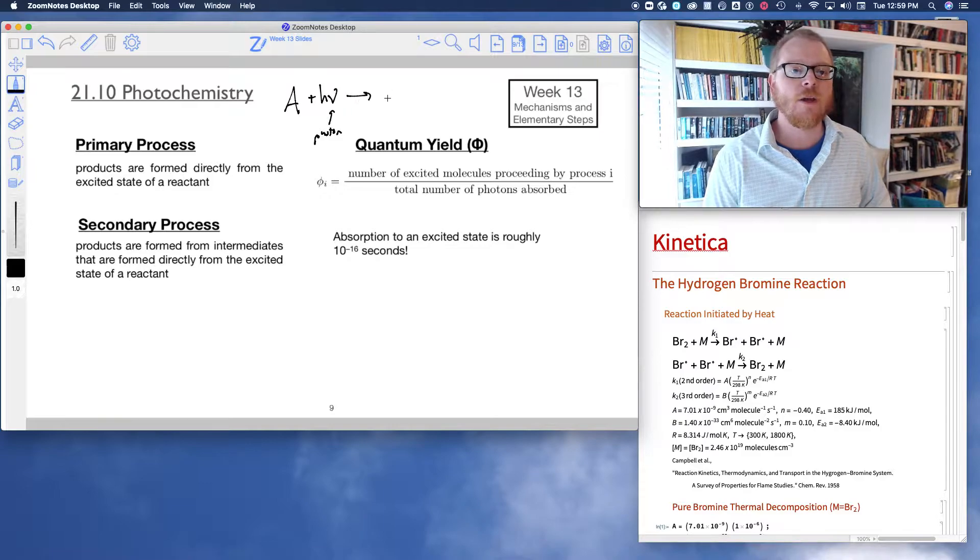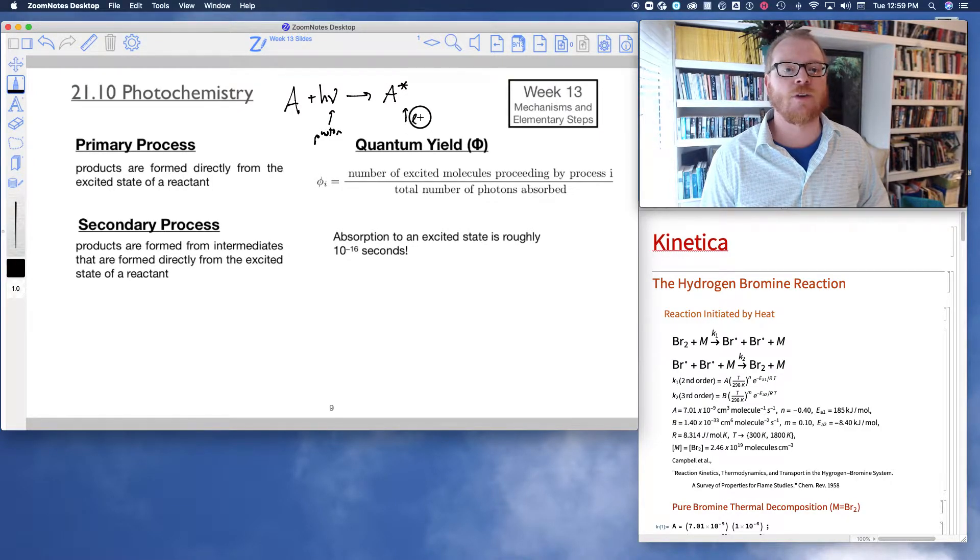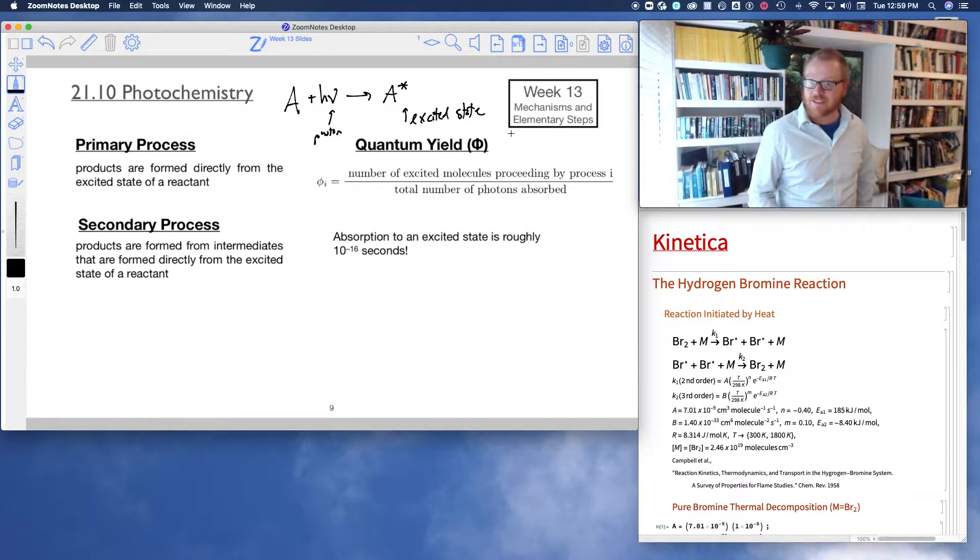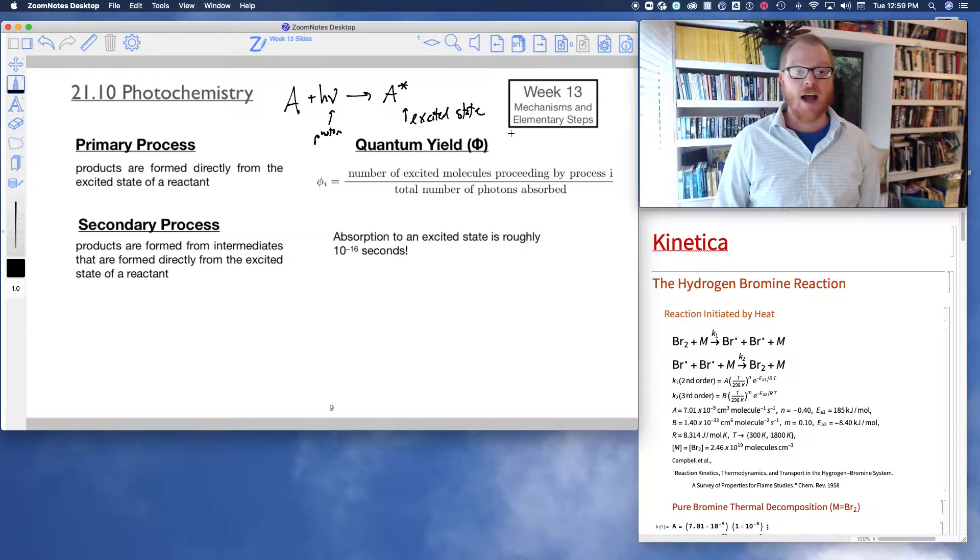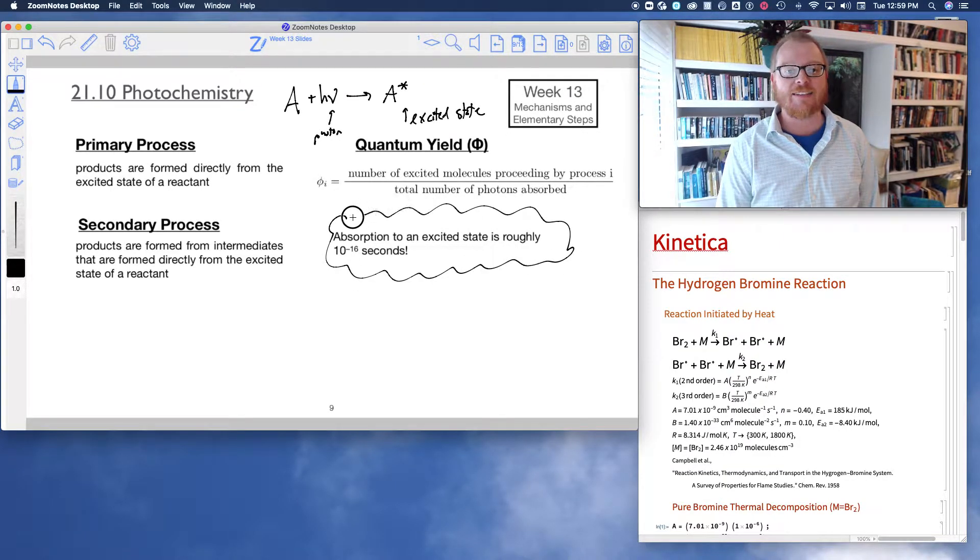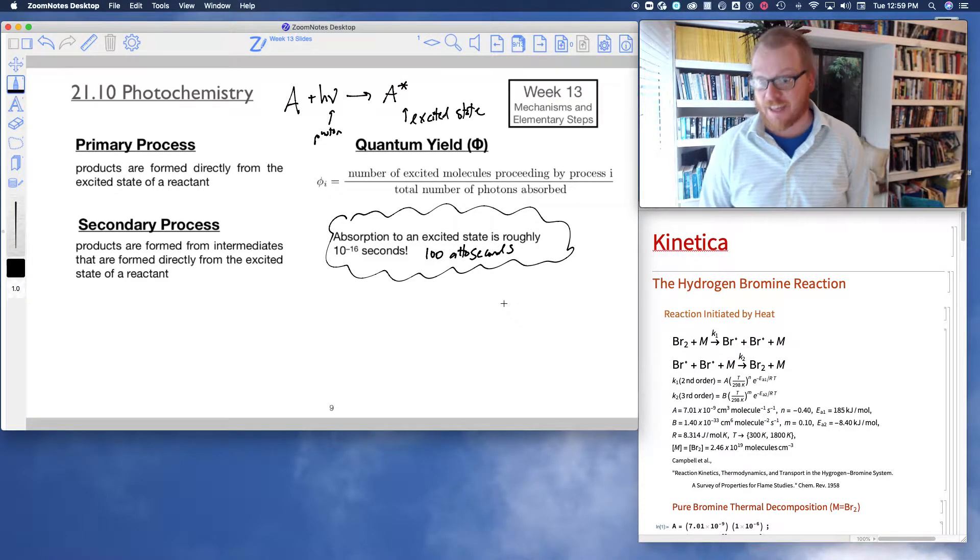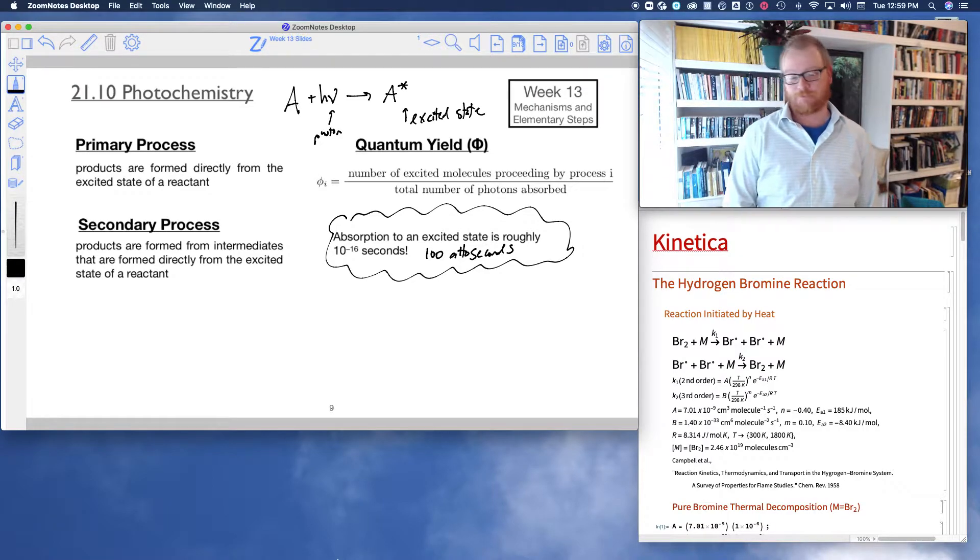It goes to A star, the excited state. So in any photochemical process, this is the first step. The molecule has to absorb a photon, and it happens really insanely fast—10 to the minus 16 seconds, so that's roughly 100 attoseconds. One attosecond is 10 to the minus 18.